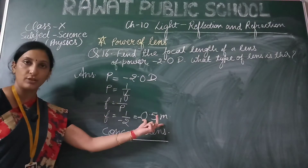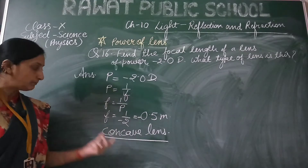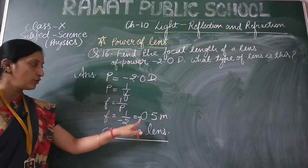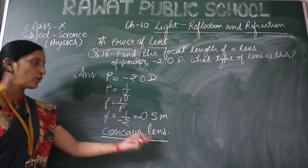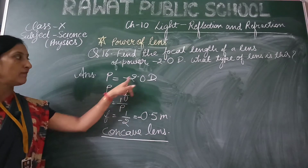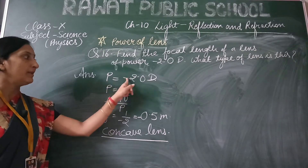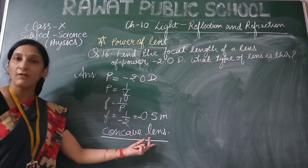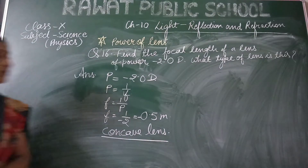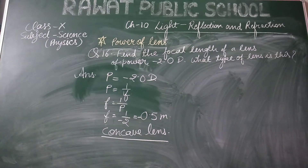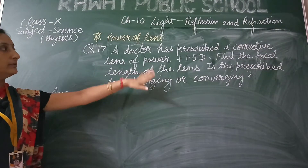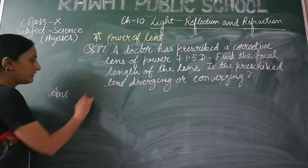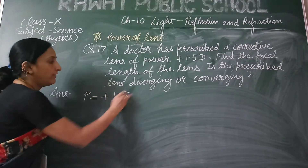You can convert it into centimeters by multiplying it with 100, and the nature of the lens is concave because the focal length has a negative sign. The next question: the power of the lens is plus 1.5 diopter.